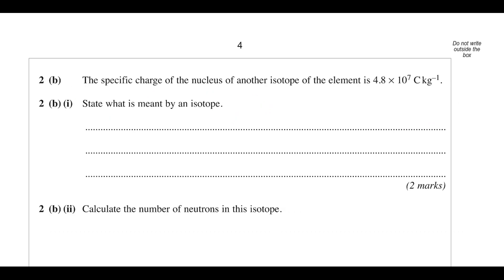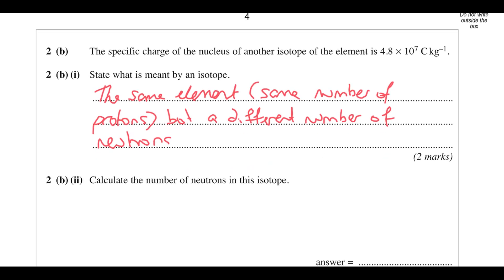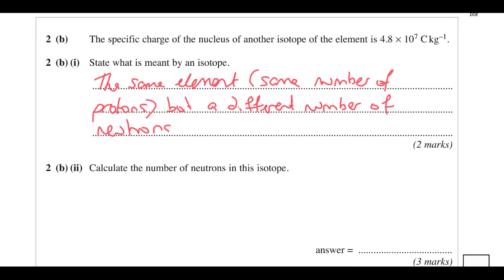So we've got the specific charge of the nucleus of another isotope — it has the same number of protons, so the same charge, but a higher specific charge. What is meant by an isotope? Isotopes have the same number of protons but a different number of neutrons. The same number of protons makes it the same element; a different number of neutrons changes the mass. We can see it has fewer neutrons because of the higher specific charge.